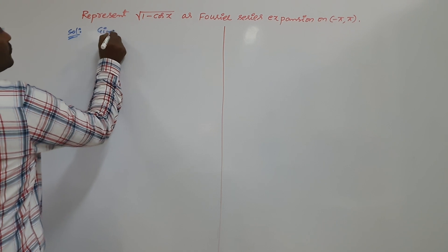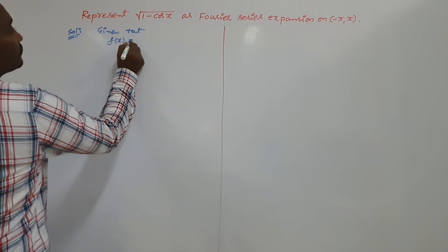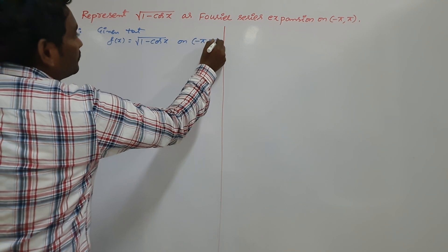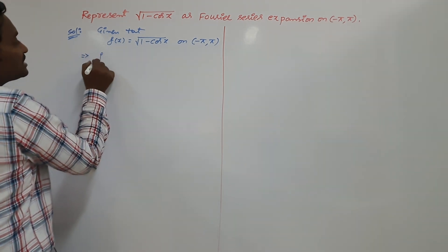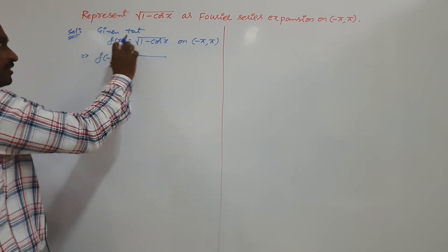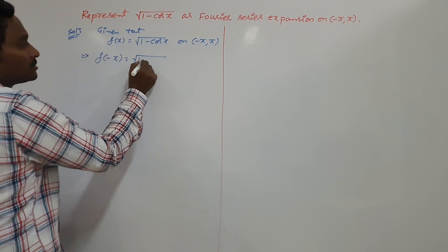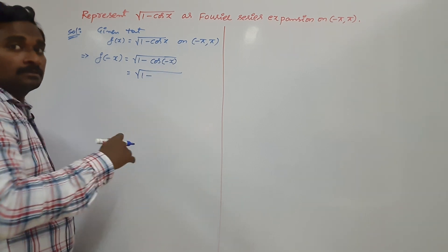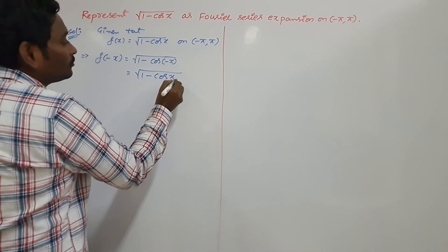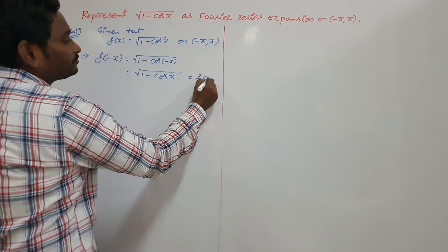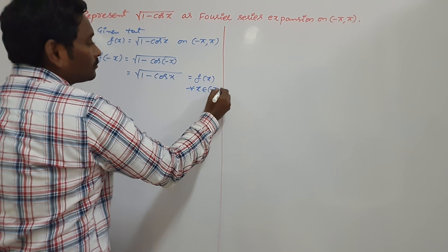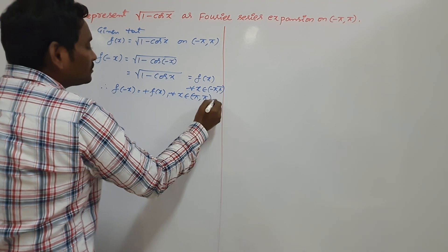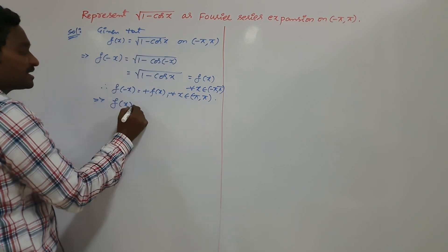Solution. Given that f of x is equal to root over 1 minus cos x, defined on the open interval minus pi comma plus pi. To check that it is even or odd, we have to find f of minus x. So f of minus x means: wherever we have x in this function, blindly replace it by minus x. You will get root over 1 minus cos of minus x. Now, what is cos of minus theta? Cos of minus theta is plus cos theta. That is why it becomes cos x only. So this term is nothing but again f of x. We observe that f of minus x is equal to plus f of x, so f of x — root over 1 minus cos x — is an even function.